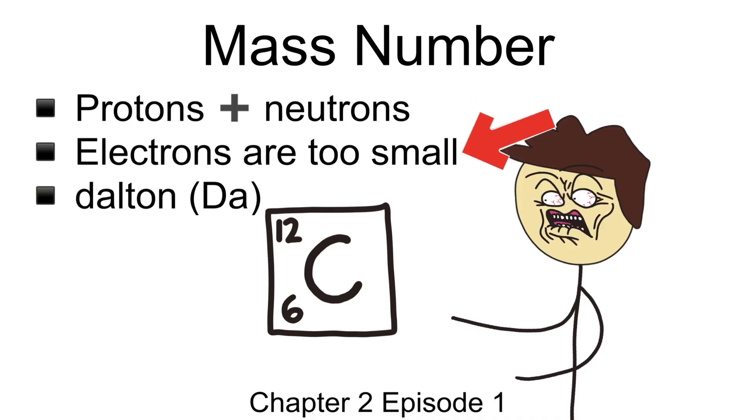The only exception here are the electrons. They're left out because they're actually so small that they're considered negligible. These particles are so tiny, it's actually very difficult to measure their weight. Biologists use a unit called Dalton, a measurement named by a scientist named John Dalton. Both protons and neutrons weigh exactly the same, about one Dalton each.